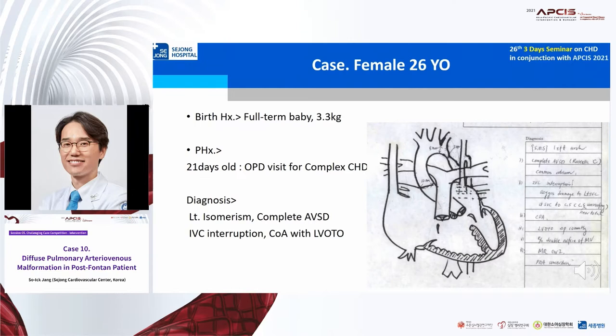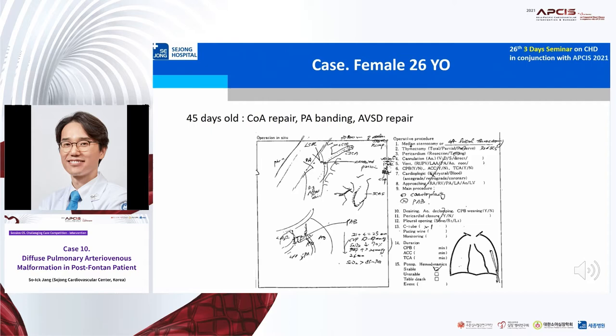She has a very long past history, but I'll make it very short. She was born at full term and brought to hospital for a complex heart problem. We found left isomerism, complete AVSD, IVC interruption, and coarctation with LVOT stenosis. She underwent quadroplasty and pulmonary banding at 45 days old.